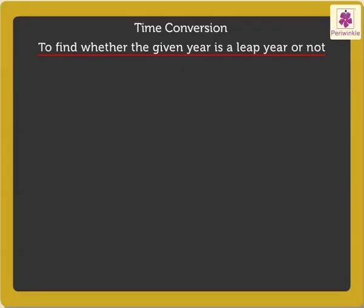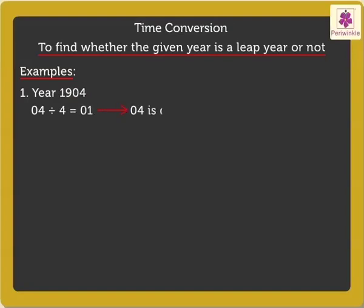Now, let's look at a few examples to understand it in a better way. Let's find out whether the year 1904 was a leap year or not. Here, the number represented by the last two digits is 04, which is divisible by 4. Thus, the year 1904 was a leap year.